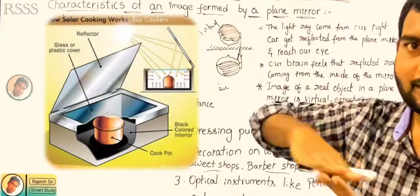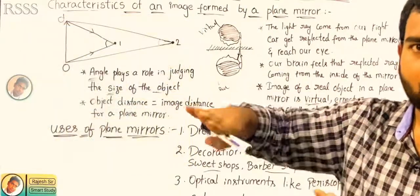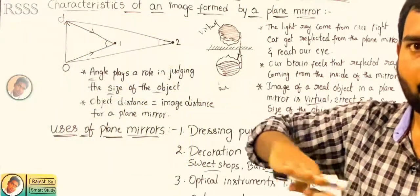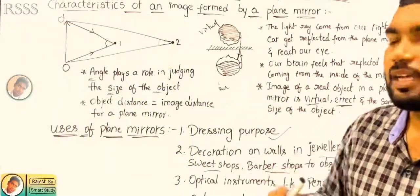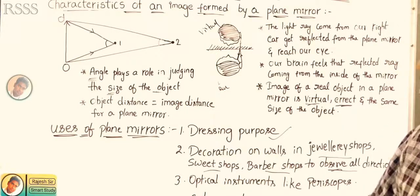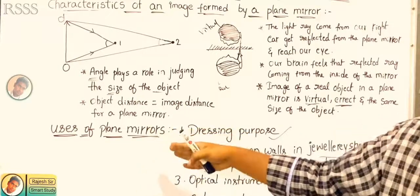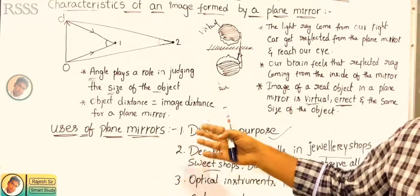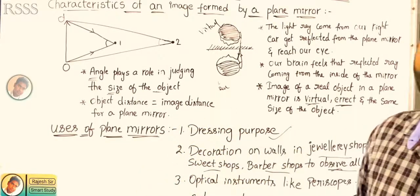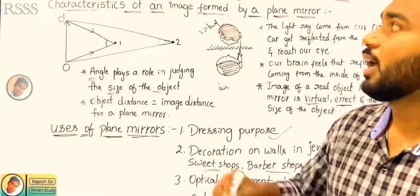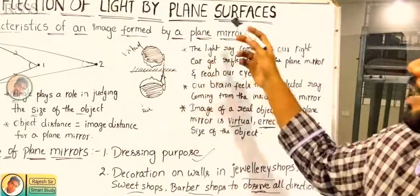And the last use is solar cookers. We can use plane mirrors in solar cookers. These are the uses of plane mirrors that we see in our day-to-day life — reflection of light by plane surfaces.